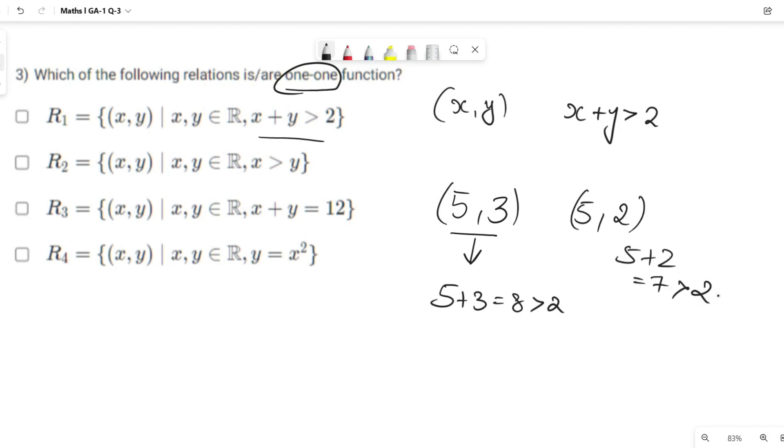Which means that suppose it is x and this is y. y has 2, 3, 5. x has 5. Then the relation is like this—it is one to many. So this is not a 1-1 function.